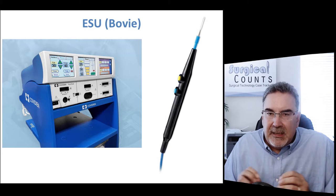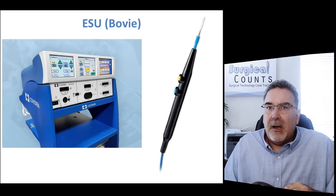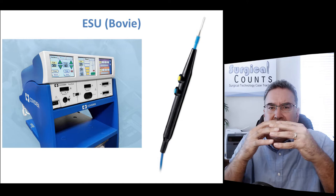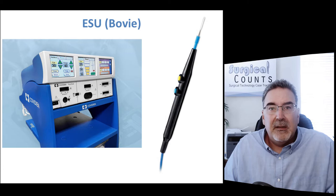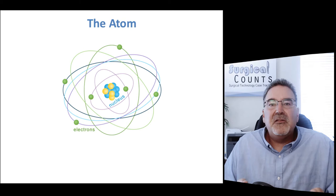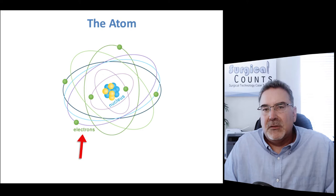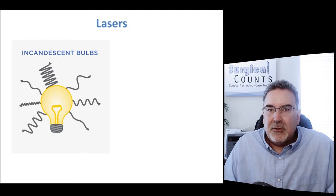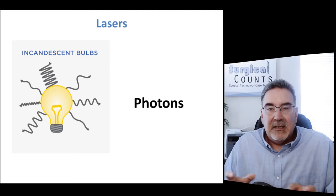The ESU uses electricity to heat up tissue to the point where it vaporizes — that's what cuts it — and then cauterizes the nearby tissue by liquefying the proteins and letting them solidify to seal off blood vessels, preventing bleeding and oozing. The ESU uses electricity, and the electron is the basic component of electricity. With lasers, we use light — light is the source of energy we apply to the tissue. And the basic element of light is a photon.